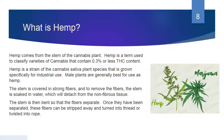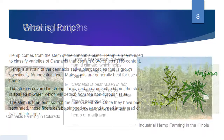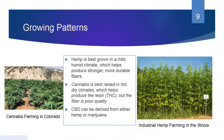The stem is covered in strong fibers. To remove the fibers, the stem is soaked in water, which will detach from the non-fibrous tissue. The stem is then bent so that the fibers separate. Once separated, these fibers can be stripped away and turned into thread or twisted into rope. Hemp is best grown in mild humid climates, which helps produce stronger, more durable fibers.